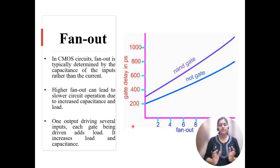In CMOS circuits, fan-out is typically determined by the capacitance of the inputs rather than the current. Whereas, in case of TTL family, the fan-out is determined based on the current.